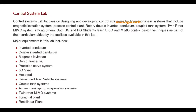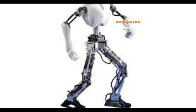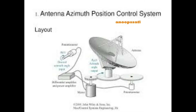Then comes the control systems lab. All flights, rockets, radars, and UAVs are controlled through automatic control. The design and implementation of control systems are studied here. For example, real-time closed-loop control — like in a car where adjusting one seat setting adjusts everything automatically — is a key concept covered in this lab.